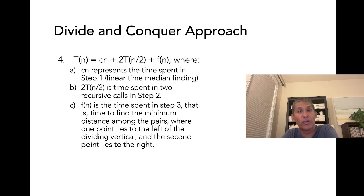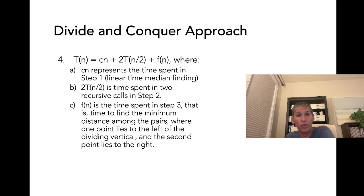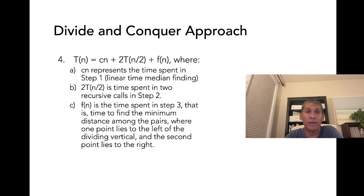Looking at the time complexity, T(n) equals cn for step one — the time spent finding the median. Recall that the median can be found in linear time; you don't need to sort. Then we make the two recursive calls: 2T(n/2). Then there is the crossover scenario which we haven't analyzed yet — we say it takes f(n) time. So that is our overall recurrence relation.